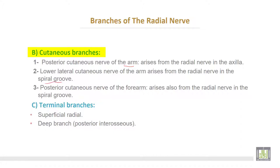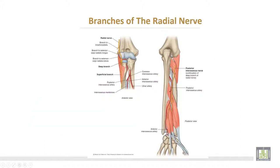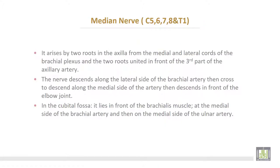Terminal branches of the radial nerve: the superficial branch, or superficial radial, is a pure sensory nerve; and the deep branch, which becomes the posterior interosseous nerve, a pure motor nerve. The posterior interosseous nerve pierces the supinator muscle to appear at the back of the forearm.